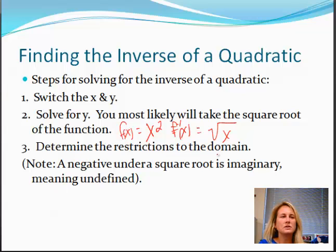Determine the restrictions to the domain. You need to understand that if you have a negative inside of the square root then you get an imaginary number. So your domain restrictions are that if you plug a number in for x and you get a negative value underneath the square root, those are your restrictions. You can't have that.